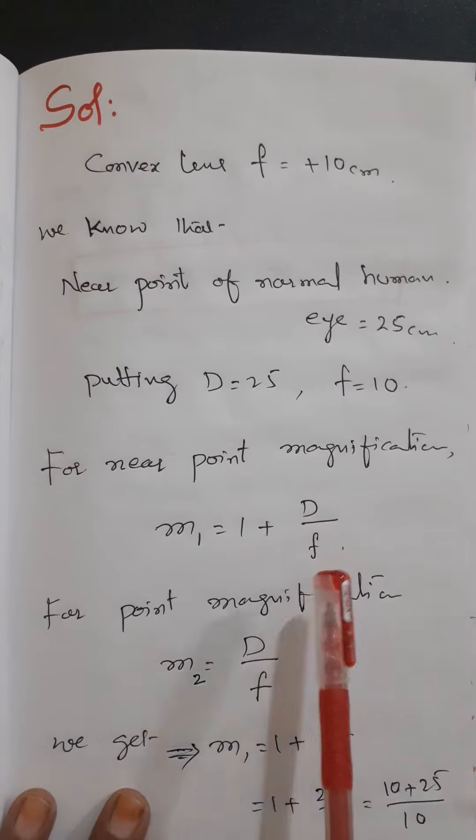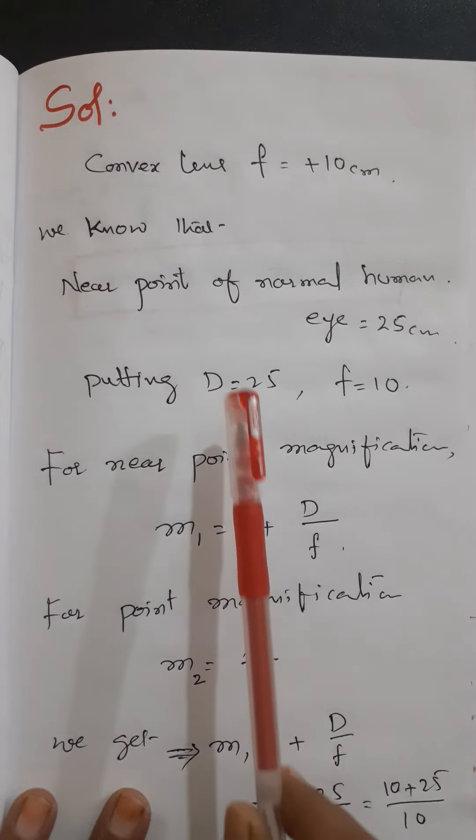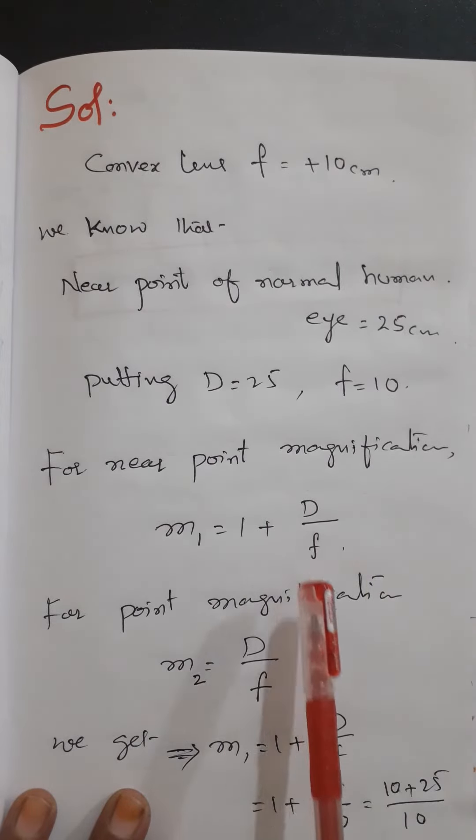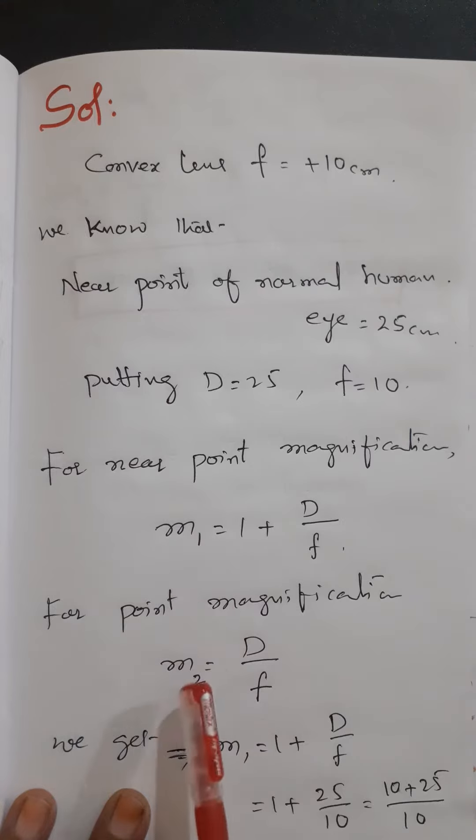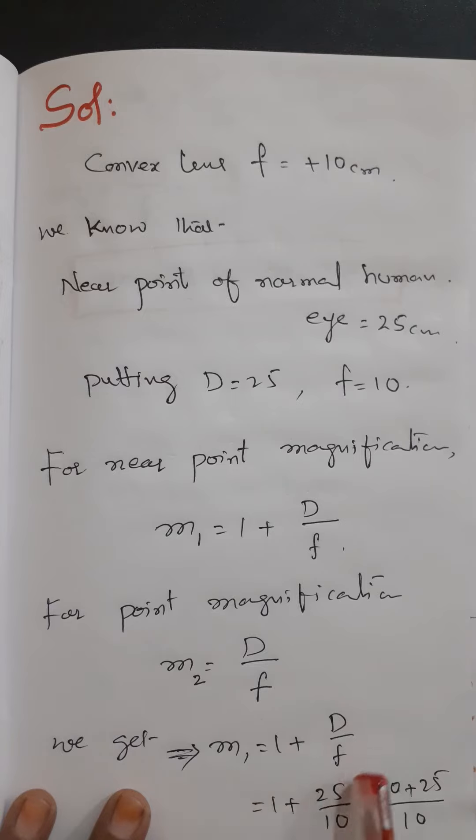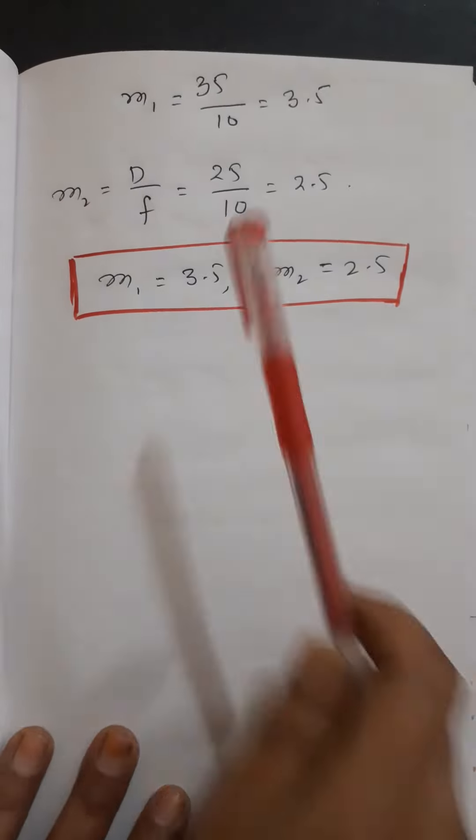Substituting the values of D and F in these equations, we will get the near point magnification. That is M₁ = 1 + D/F = 1 + 25/10 = 35/10 = 3.5.